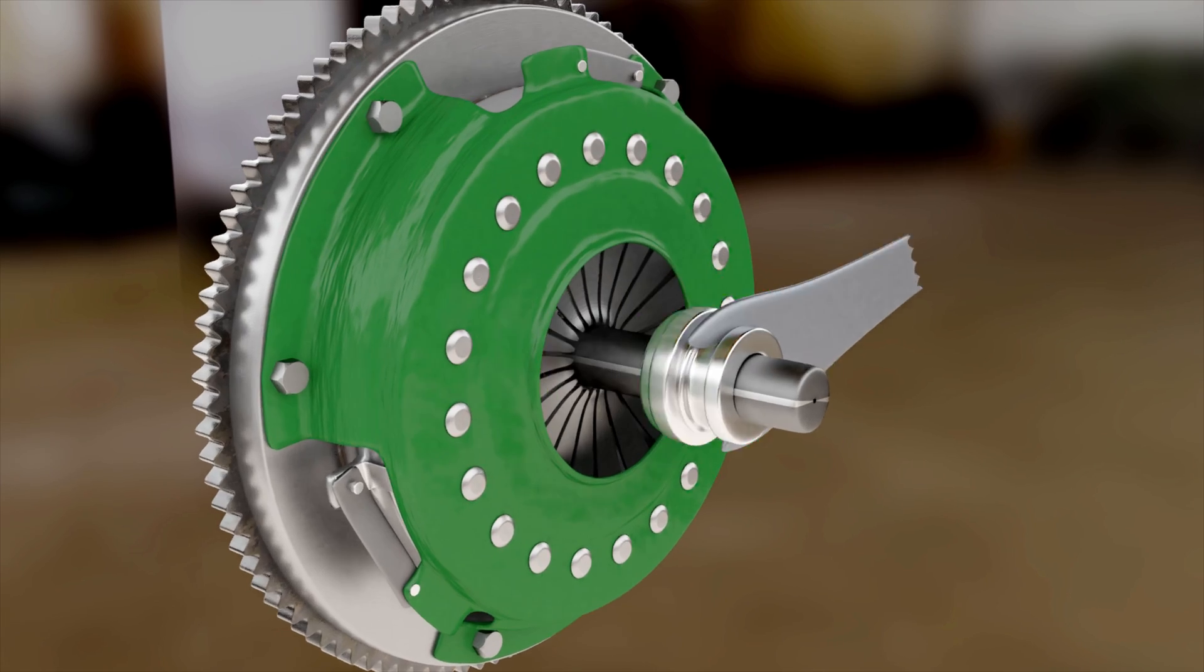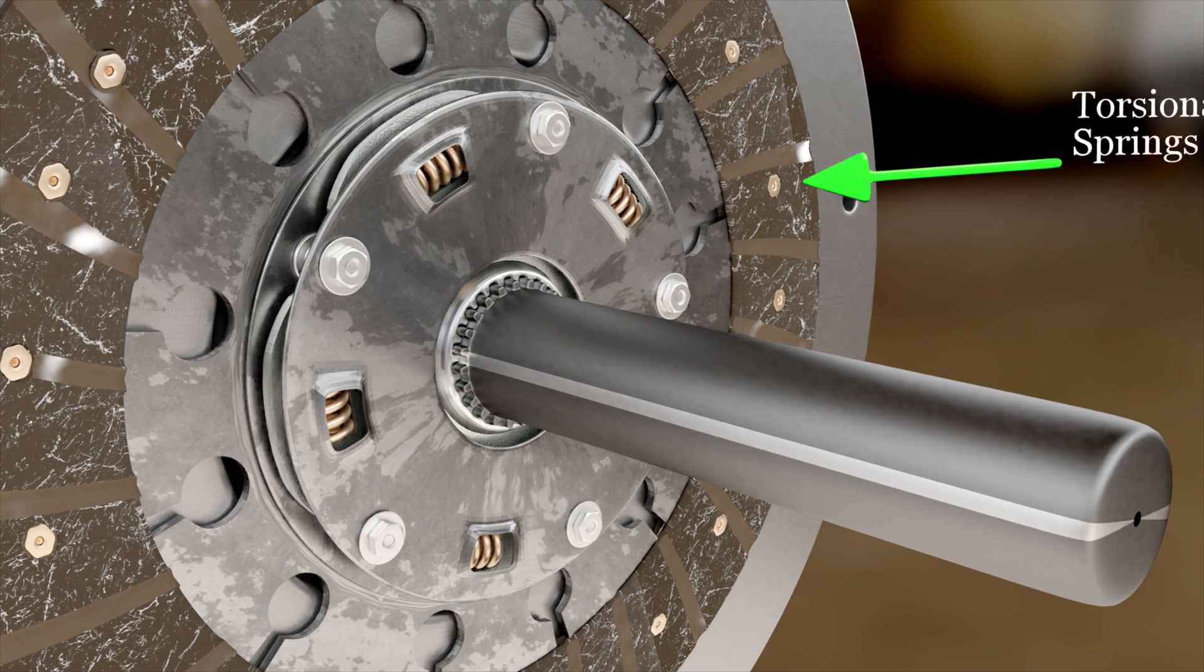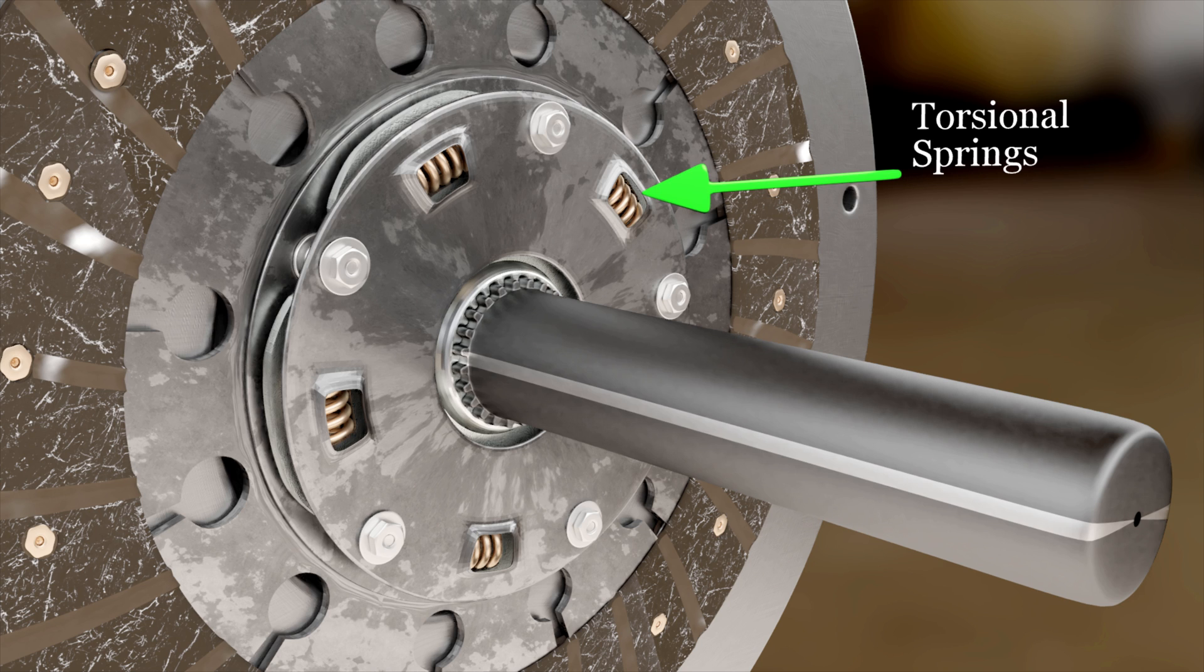To reduce the effect of engine fluctuation, abrupt clutch engagement, and other shocks, torsional springs are provided in the clutch plate.